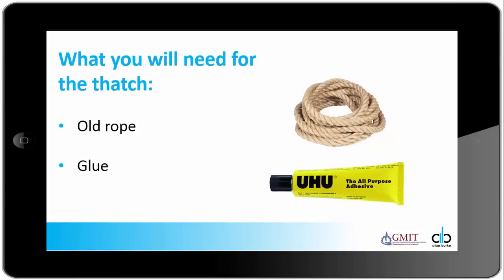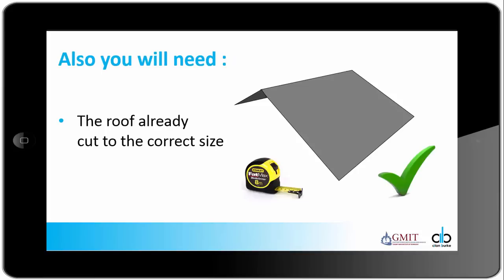What you will need to make the thatch is some old rope, some glue and possibly a scissors. Also you will need the roof already cut to the correct size.